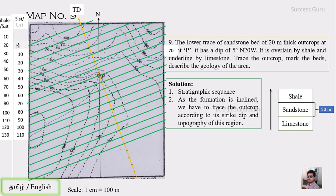For the shale-sandstone contact, we find intersection points of the new strike values with matching contours: 120 here, then 100, 90, 80, 70, 60 appearing twice, 70 again, and 80. We trace a smooth line through these points. As a shortcut, remember that consecutive bedding planes are somewhat parallel to one another, just as adjacent contours are roughly parallel.